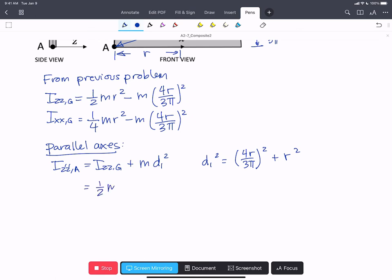We have 1/2 m r² minus m (4r over 3π)² plus m times (4r over 3π)² plus m r².